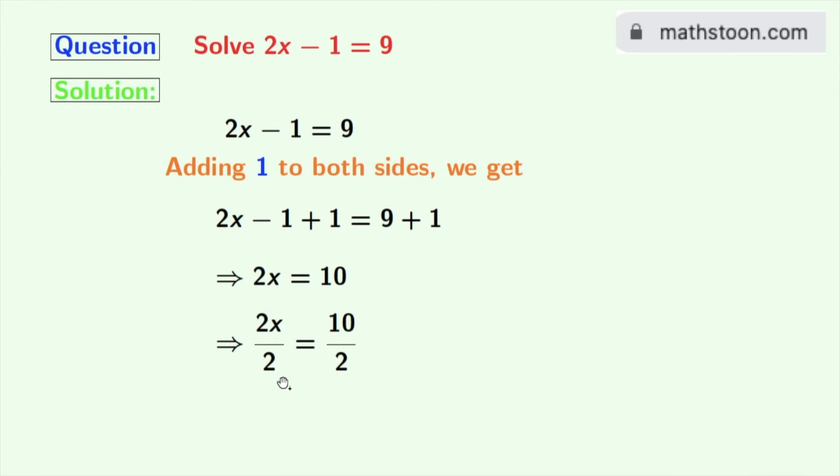See that 2, 2 get cancelled. So we have x in the left hand side and in the right hand side as 10 divided by 2 is 5. So we get x is equal to 5 as our final answer.